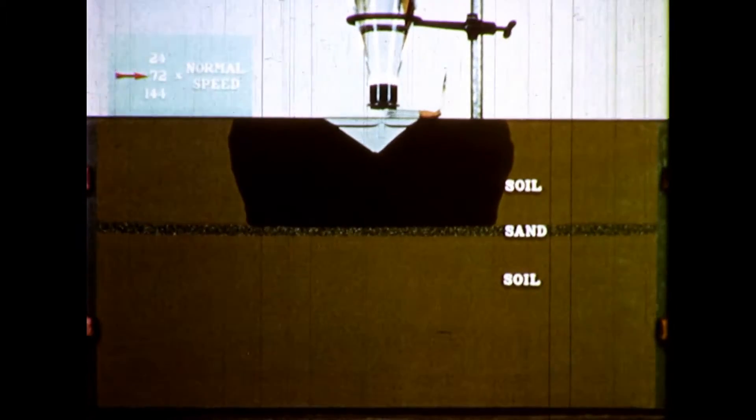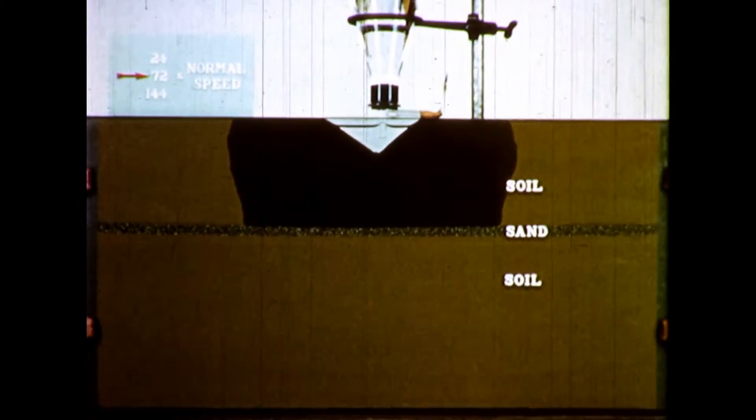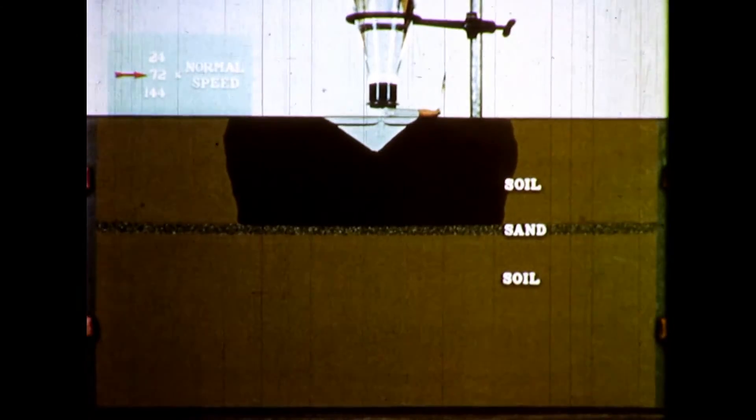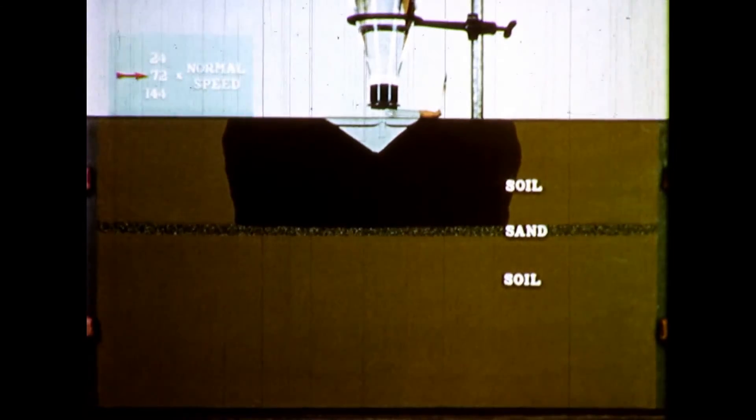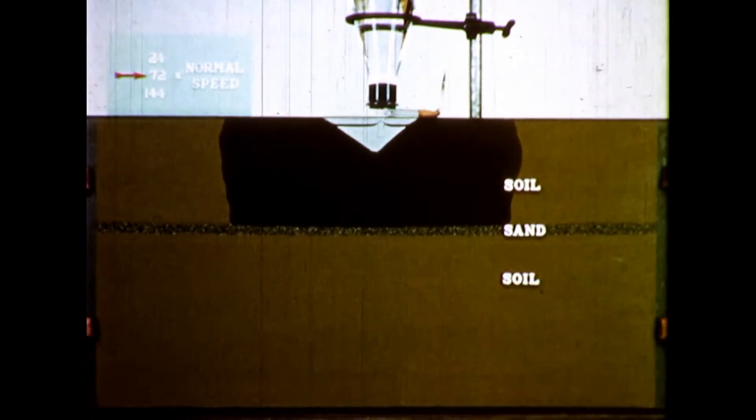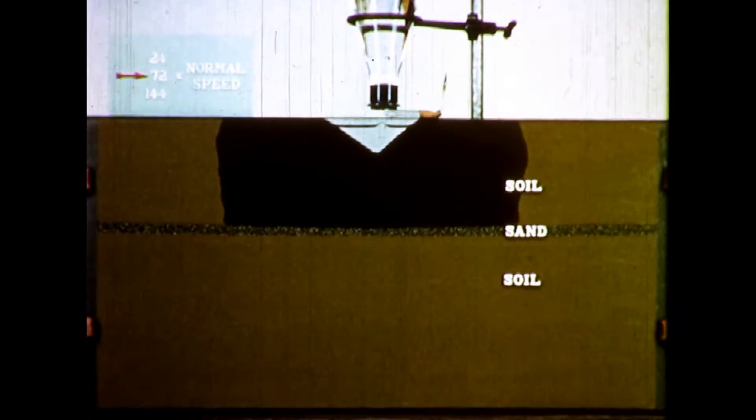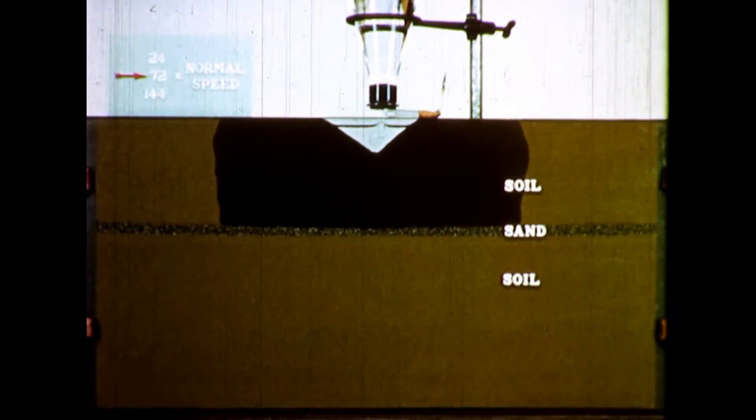What happens to water in soil containing a sand layer is typical in principle of what happens to water in field soils where sands and gravels occur as layers in finer soil material. A great deal of agricultural land is layered in this fashion.